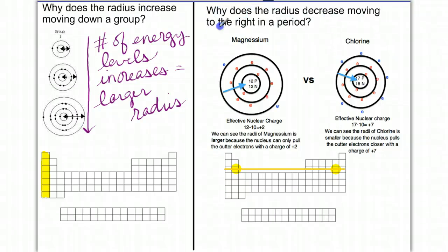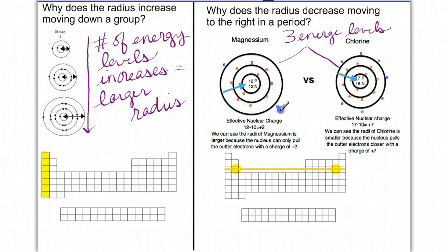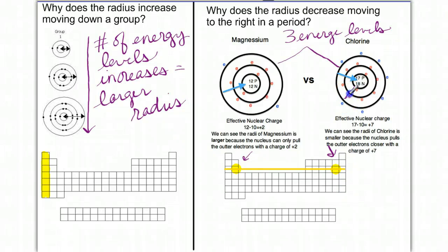Why does the radius decrease when you move to the right in a period? This has to do with the number of energy levels and the atomic number. Notice that both magnesium and chlorine have the same number of energy levels — three. However, as you move from magnesium to chlorine, the atomic number goes up, so we have more protons in the nucleus. As we increase nuclear charge, there's a stronger pull between the nucleus and the outer energy levels, causing the atom to be smaller. Magnesium has less nuclear pull, allowing the atom to be larger.